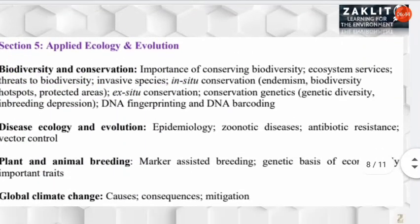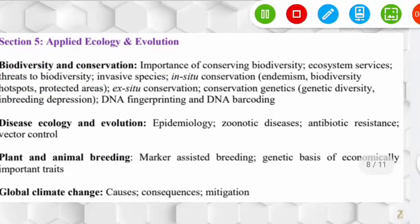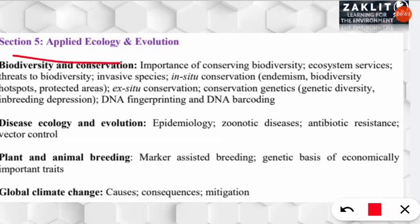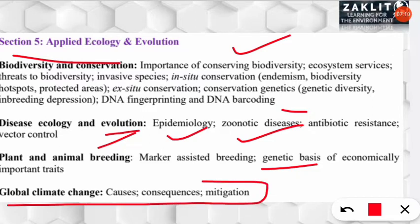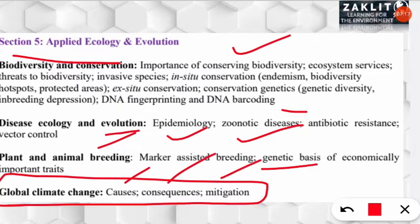The fifth and final section is applied ecology and evolution, covering biodiversity and conservation — which overlaps well with the NET environmental science syllabus. It also includes disease ecology and evolution such as epidemiology and zoonotic diseases, plant and animal breeding and their genetic basis, mutualism, and global climate change — its causes, consequences, and mitigation.